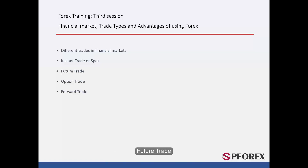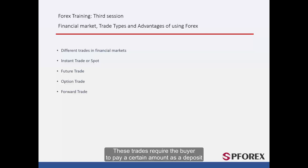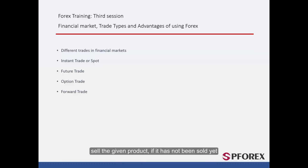The second type of trade is an upcoming or future trade. In these contracts, a fixed future date should be settled on by both parties as an expiry date. These trades require the buyer to pay a certain amount as a deposit. If the expiry date is reached, then the owner must sell the given product, if it has not been sold yet.